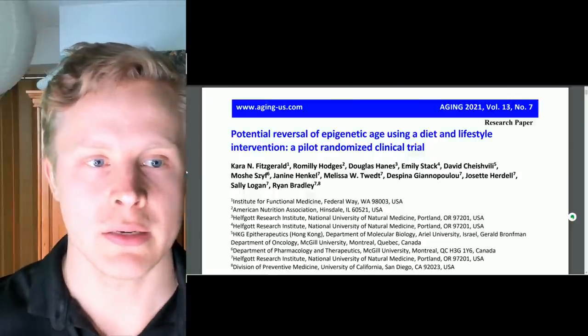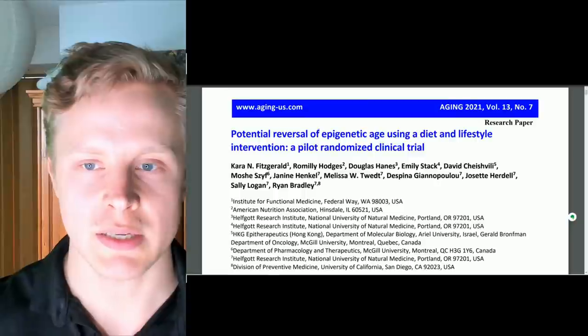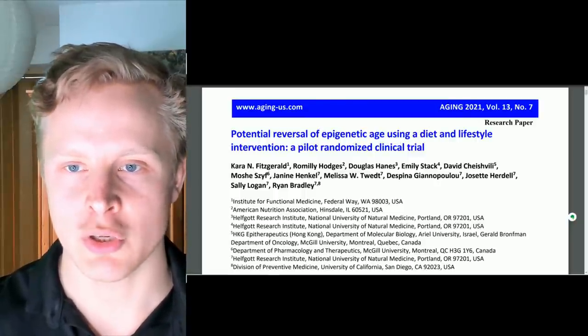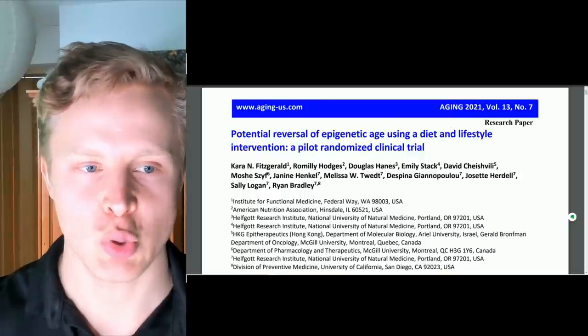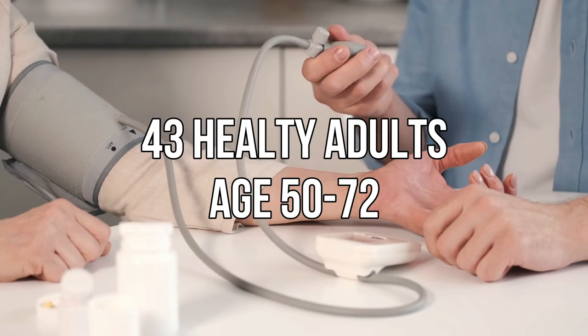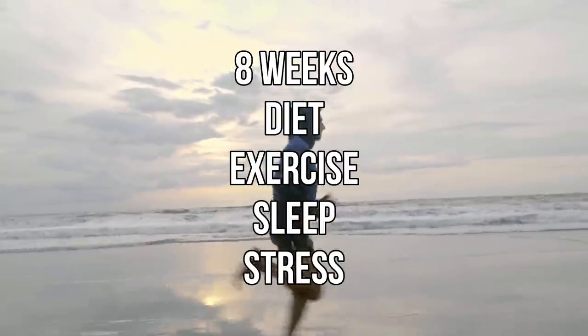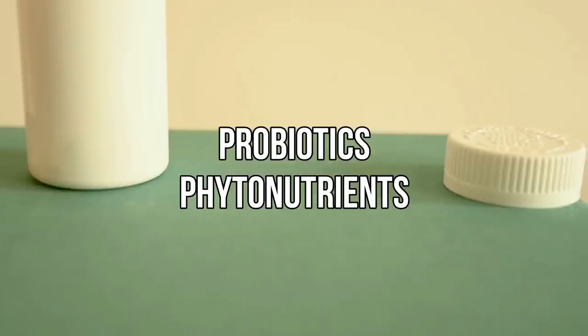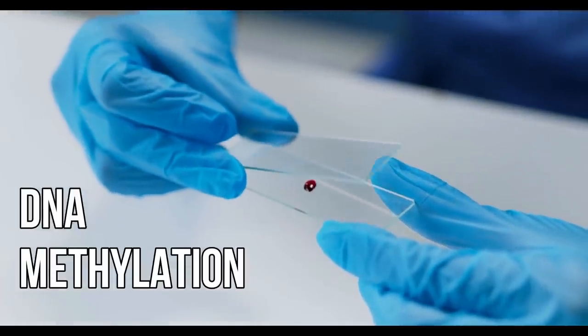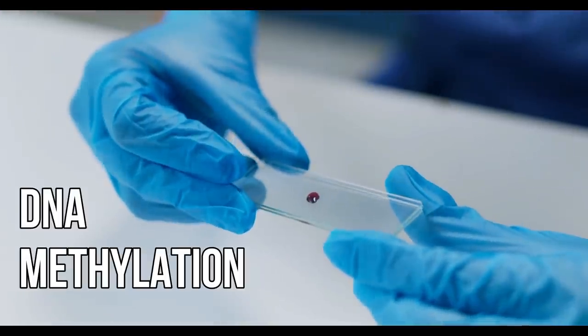So here is the study and the title is Potential Reversal of Epigenetic Age Using a Diet and Lifestyle Intervention, a Pilot Randomized Clinical Trial and was published in the journal Aging in April 2021. They took 43 healthy adults between the ages of 50 and 72 and they put them on an eight-week treatment program that included diet, sleep, exercise and relaxation guidance as well as some supplemental probiotics and phytonutrients.